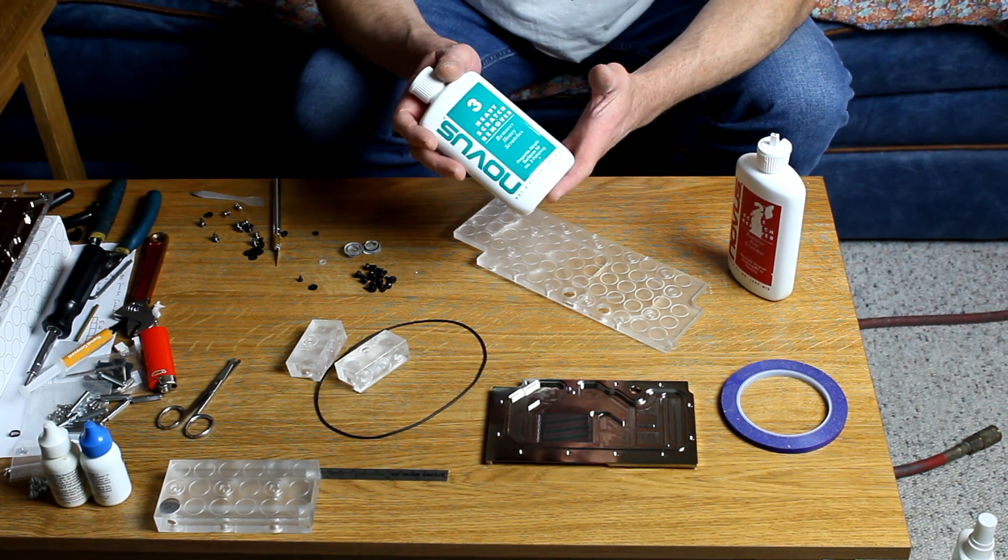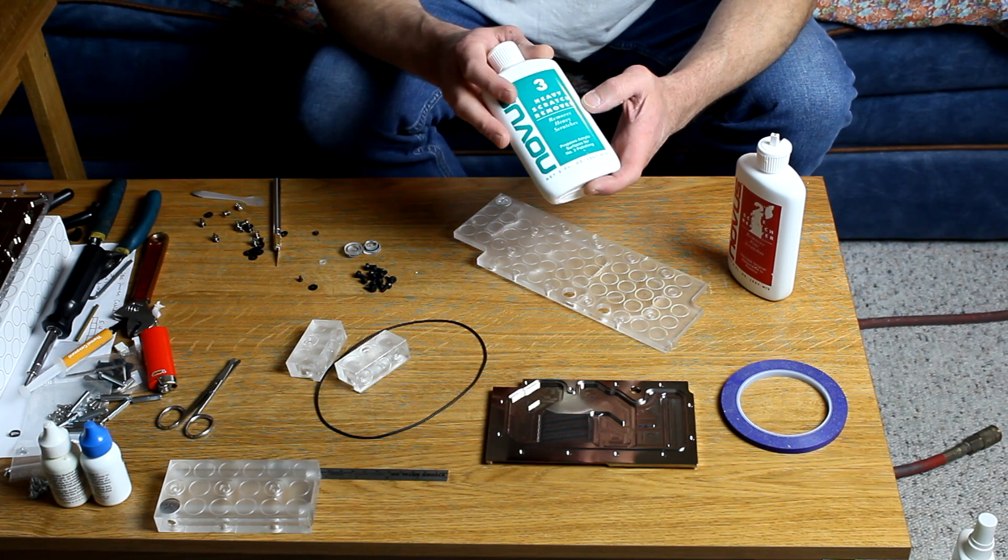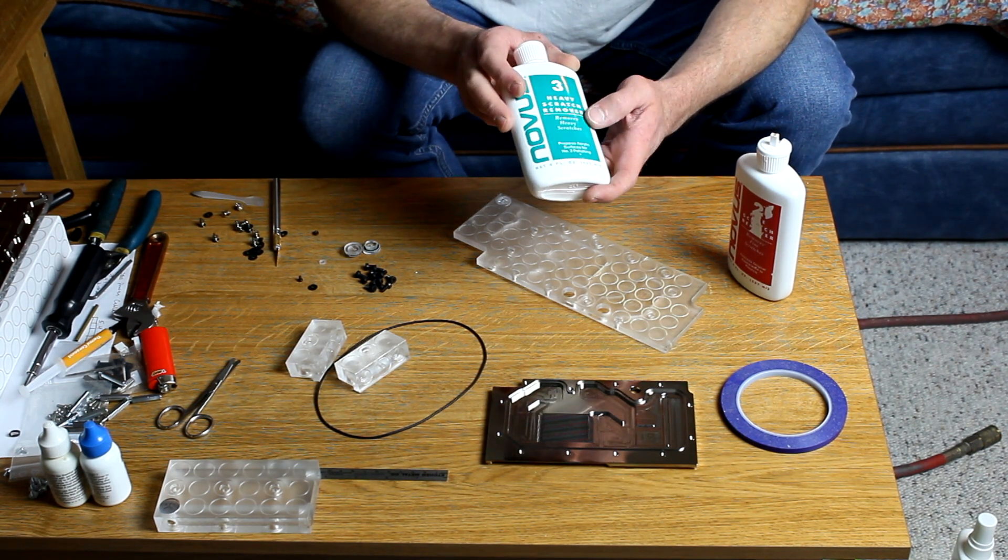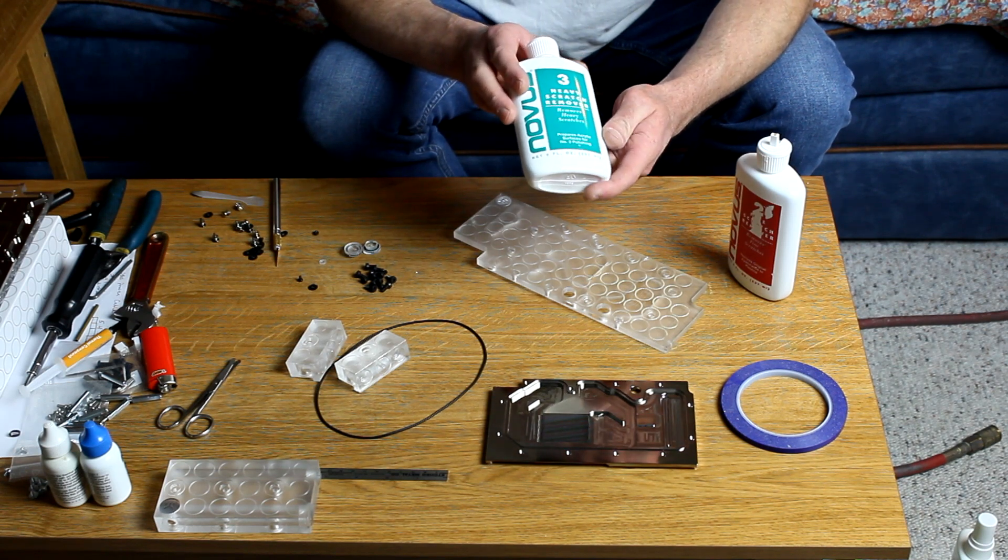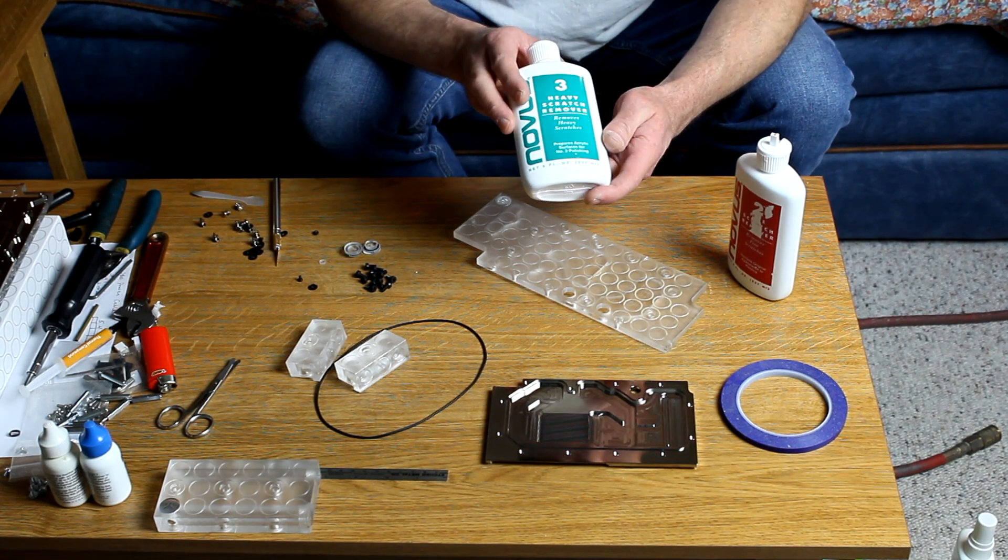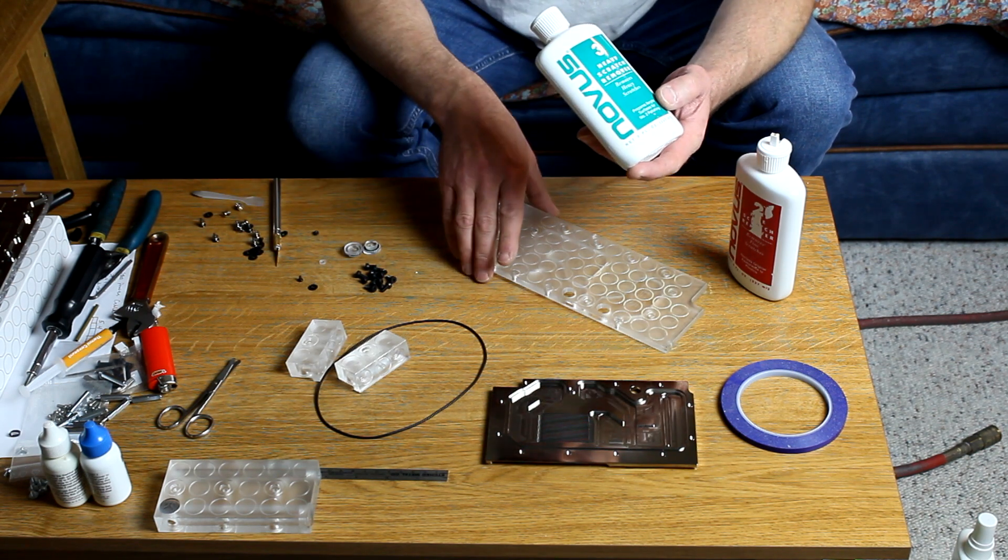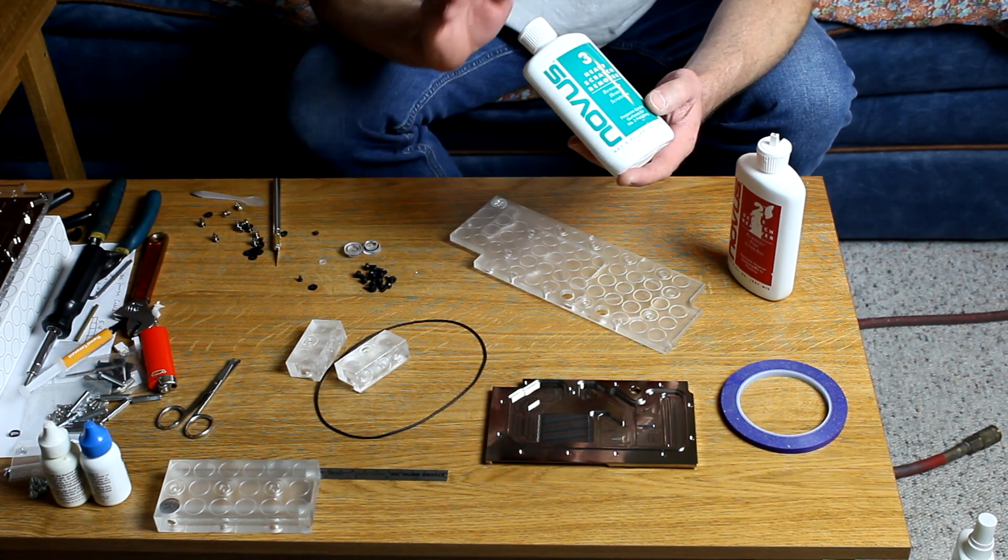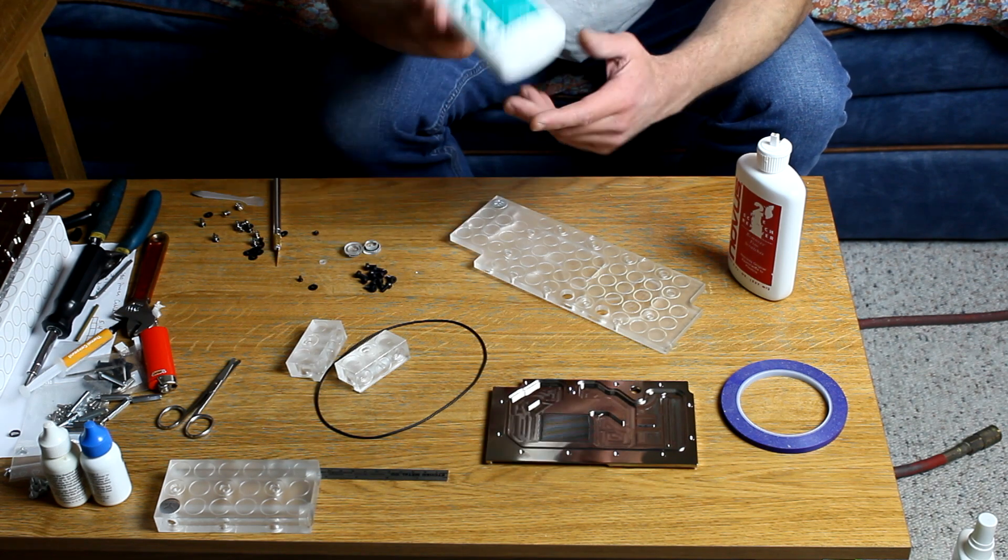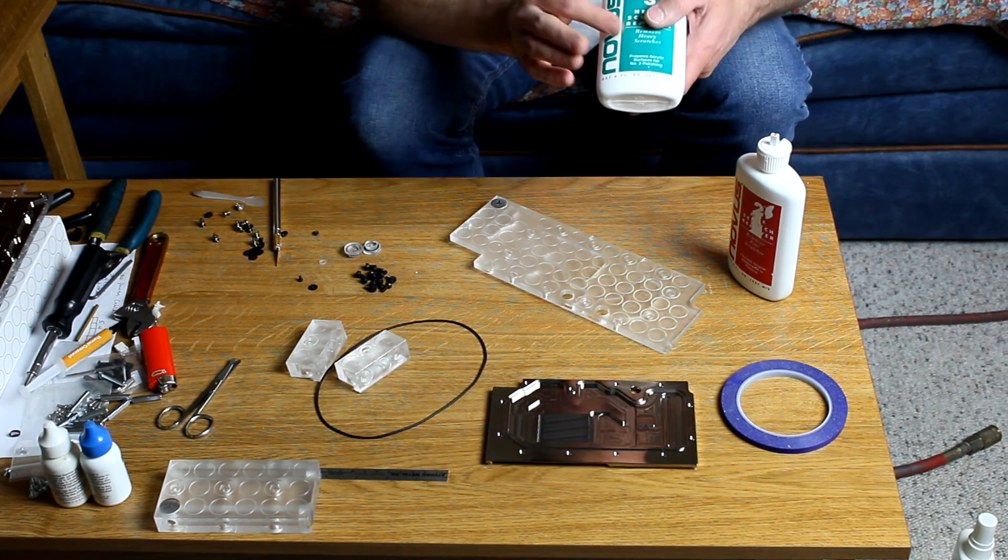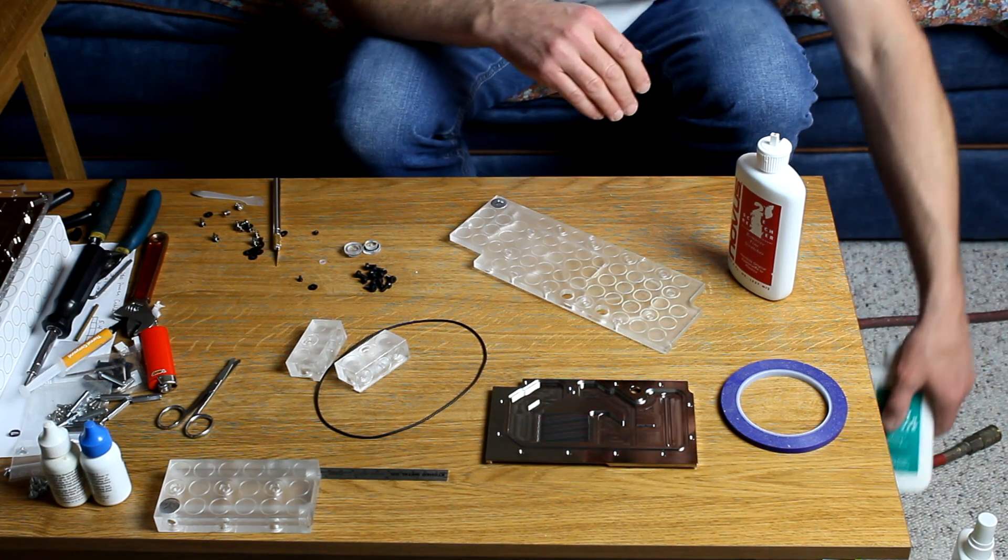The level three that you get with the Novus kit is a heavy scratch remover. This will take some pretty harsh rub marks off of clear acrylic reservoirs - anything that you have clear or you want to have clear. This stuff is awesome to use. Number three, once again, big scratches or more aggressive scratches.